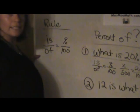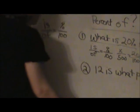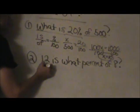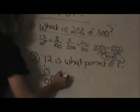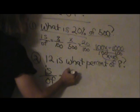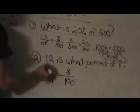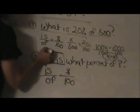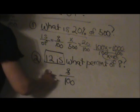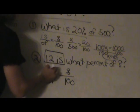So let's go down and take the second example in slow-mo. I'm going to write my formula: is over of equals percentage over 100. Now let's do some replacing here. 12 is. 12 I'm going to replace where the is is. It's my is part.